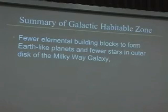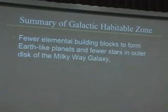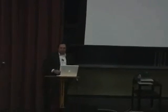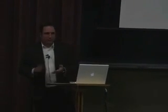The factors that set the boundaries of the galactic habitable zone are the following. There are fewer elemental building blocks to form Earth-like planets and fewer stars in the outer disk of the Milky Way galaxy. As you go out from the center toward the edge, the density of stars drops, and the abundance of heavy elements goes down. You need things like oxygen, iron, magnesium, and silicon to build Earth-like terrestrial, rocky planets, and those elements become rarer toward the outer disk.